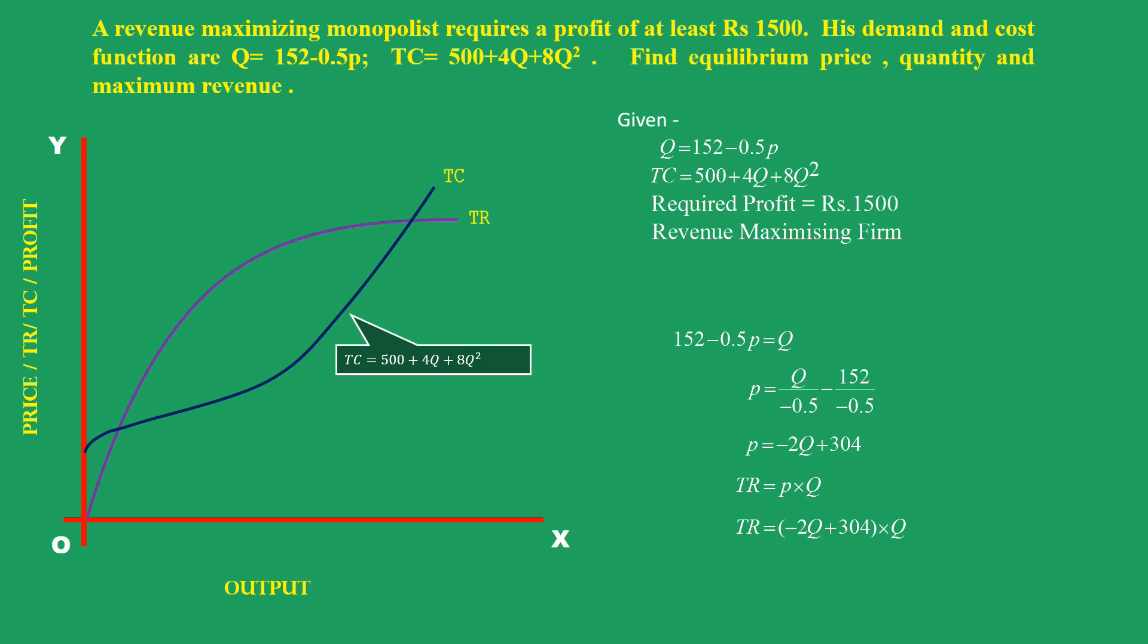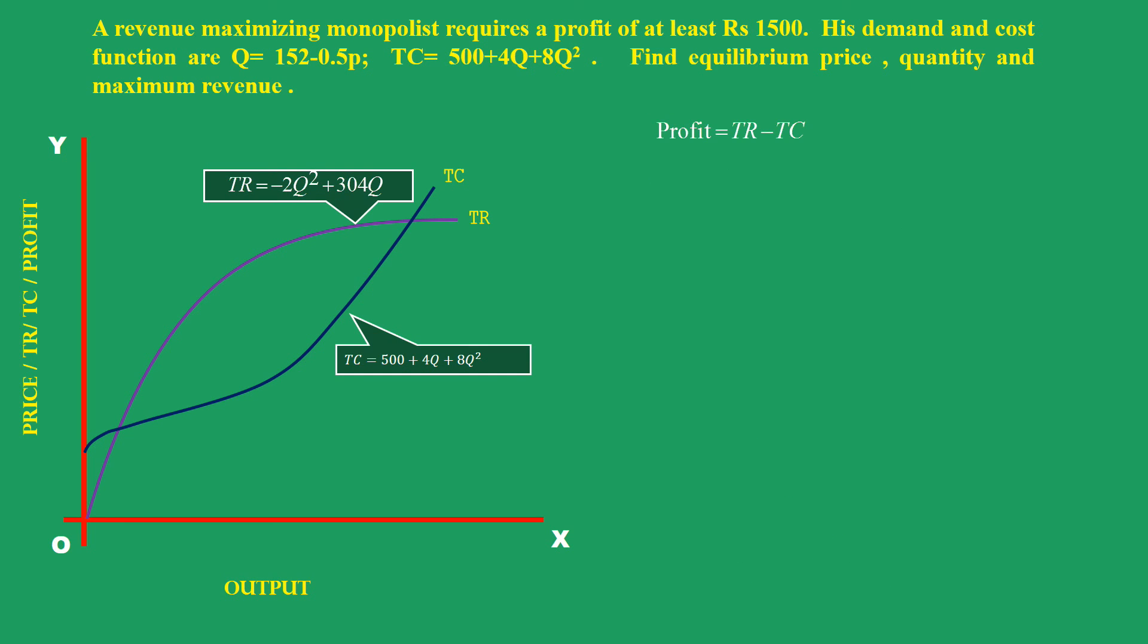Total revenue TR equals P times q. Finally we get TR = -2q² + 304q.